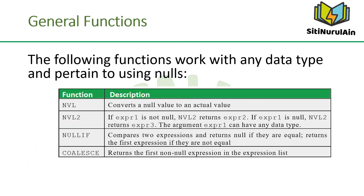The following functions work with any data type and pertain to using nulls. NVL converts a null value to an actual value. NVL2 returns expression 2 if expression 1 is not null, and returns expression 3 if expression 1 is null; the argument expression 1 can have any data type. NULLIF compares two expressions and returns null if they are equal, or returns the first expression if they are not equal. COALESCE returns the first non-null expression in the expression list.